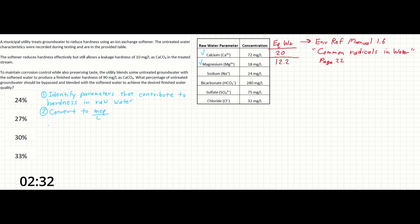So to convert calcium, we will divide our concentration of 72 milligrams per liter by the equivalent weight of 20, and get just about 1.5 milliequivalents per liter.